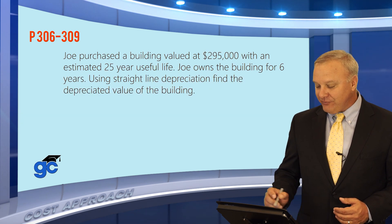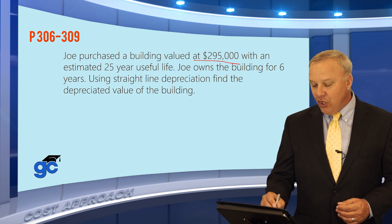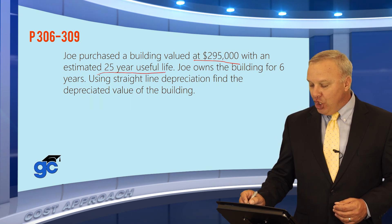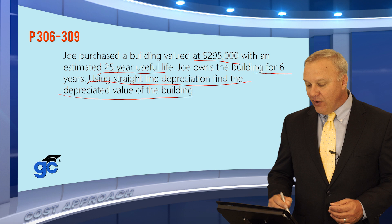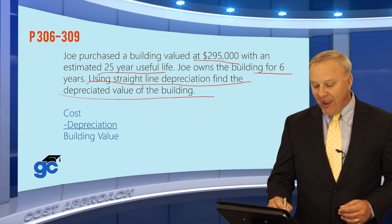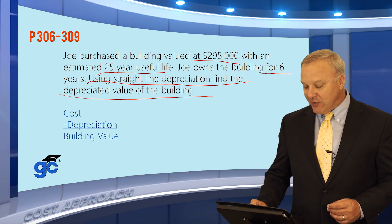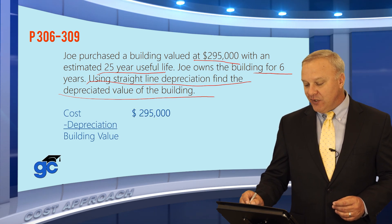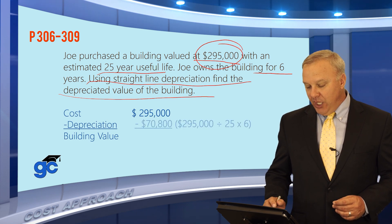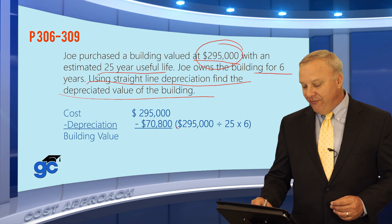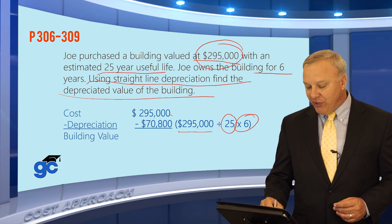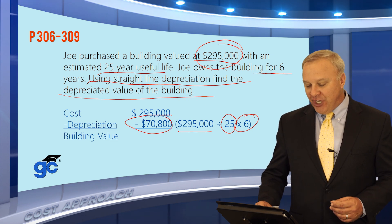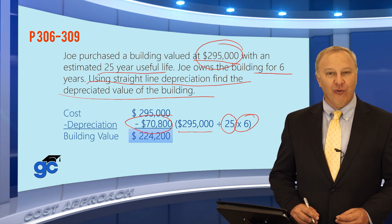Let's go one step further. Joe purchased a building valued at $295,000 with an estimated 25-year useful life. Joe owns the building for six years, and the question asks: using straight-line depreciation, find the depreciated value of the building today. The cost is $295,000. Dividing $295,000 by 25 gives the annual depreciation; multiplied by six years, the total depreciation is $70,800. Therefore, the depreciated value of the building today is $224,200.